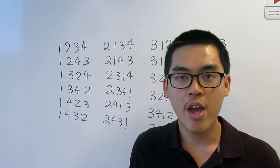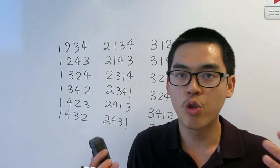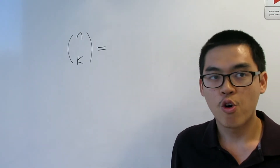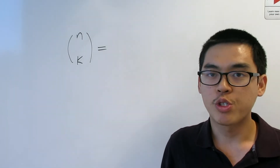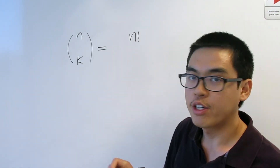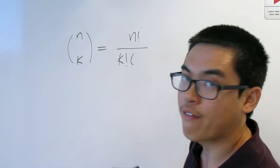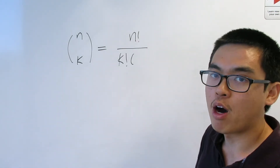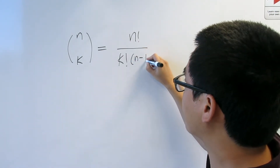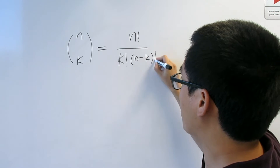With this, we are ready to dig into the formula for N choose K. The formula is: N choose K equals N factorial on top, divided by K factorial times N minus K factorial on the bottom.